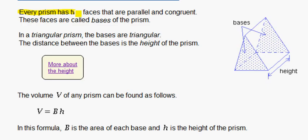Every prism has two faces that are parallel and congruent. These faces are called bases of the prism. In a triangular prism, the bases are triangular. The distance between the bases is the height of the prism.